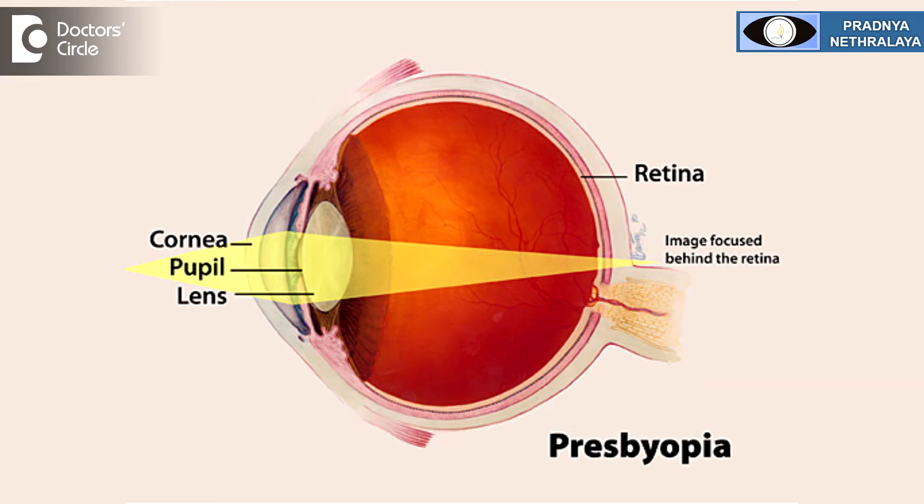Corneal curvature abnormalities can also get corrected over a period of time. The other cause of refractive error is what is called presbyopia, which usually occurs after the age of 40 years. This is because of the lack of elasticity of the lens.